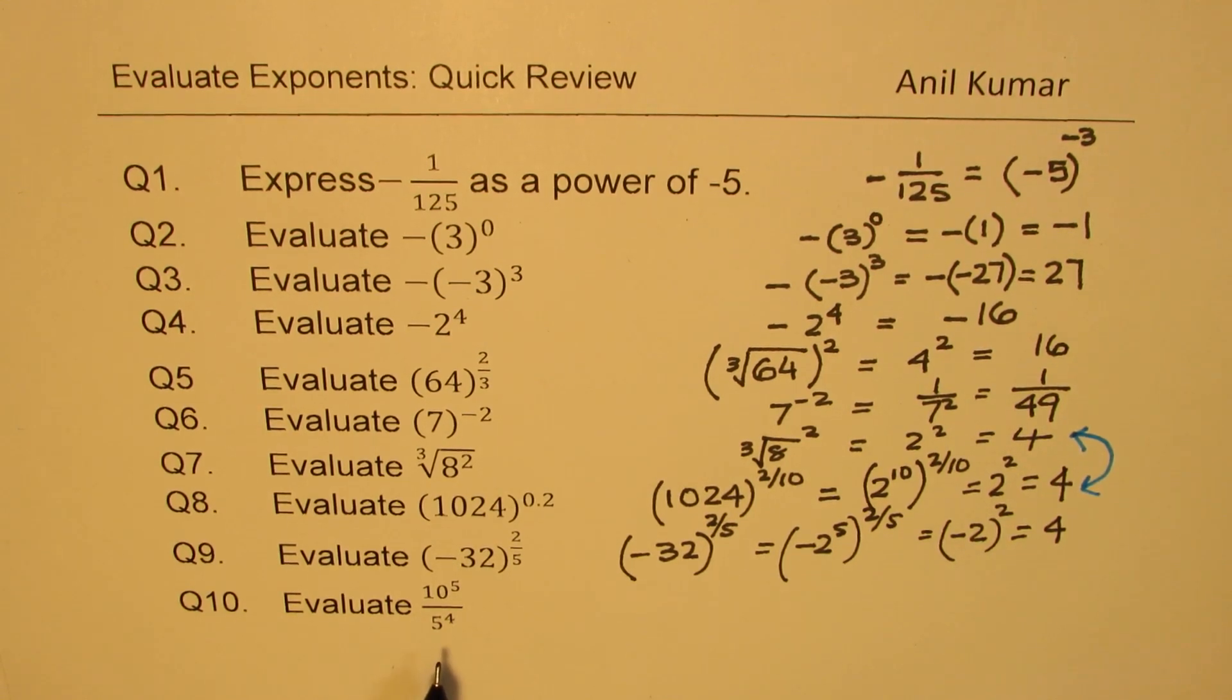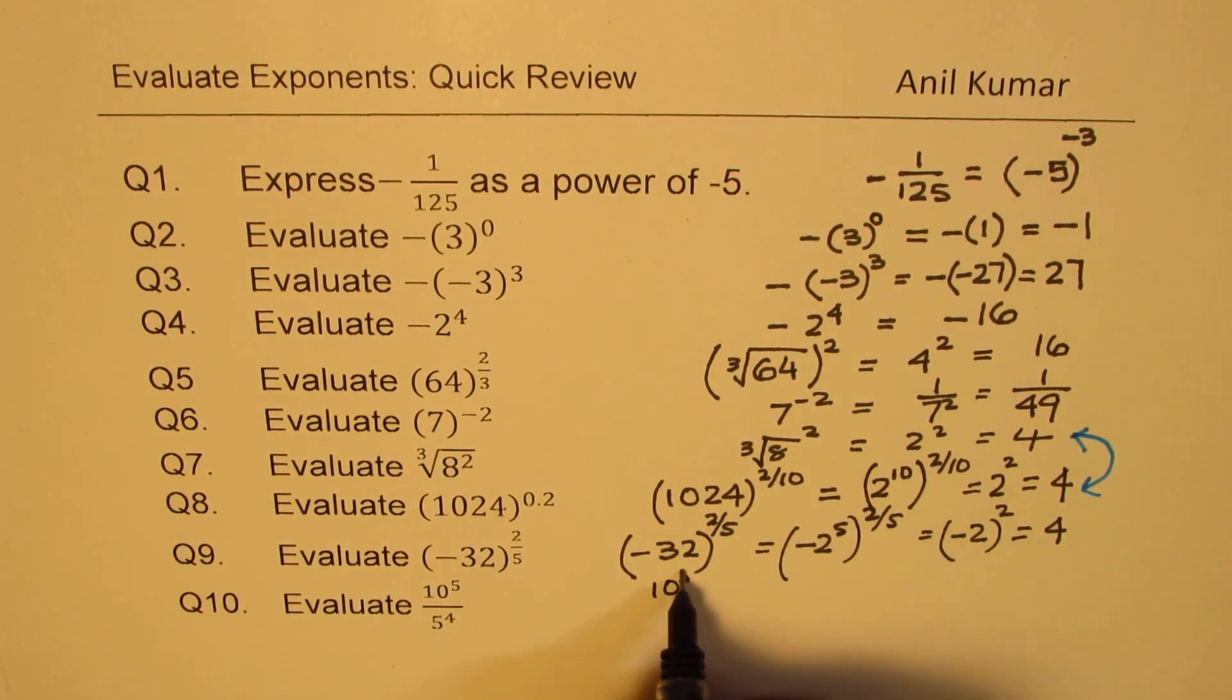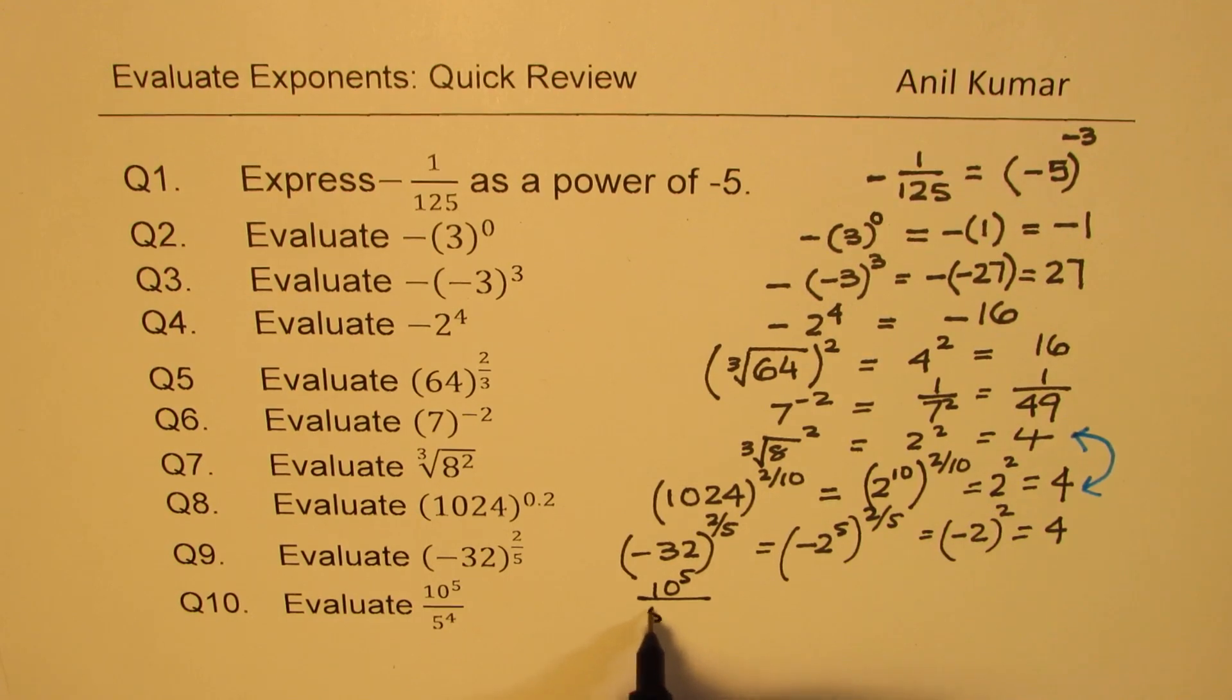Question number 10, the last question here is 10 to the power of 5 divided by 5 to the power of 4. See this, 10 to the power of 5 divided by 5 to the power of 4. Well, 10 can be written as 2 times 5, correct?